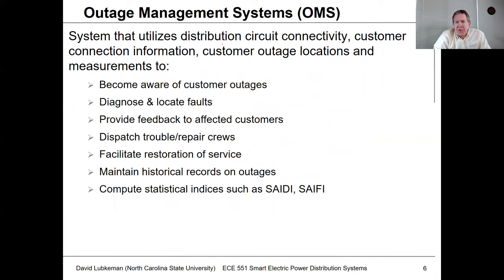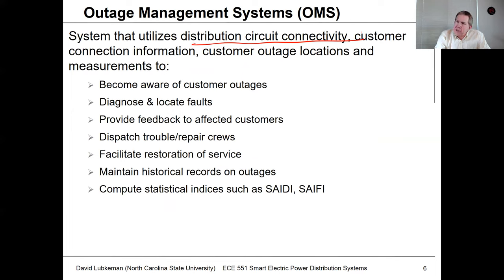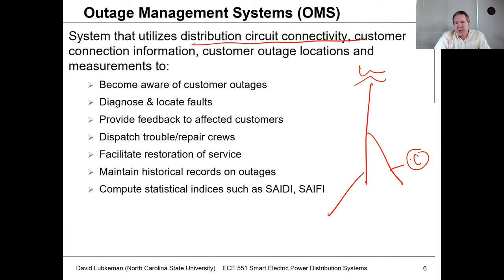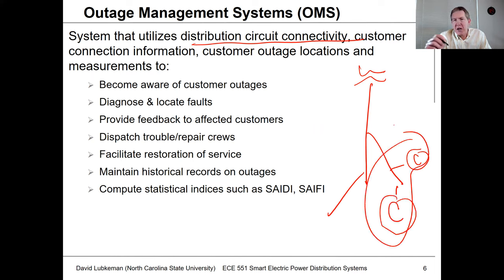The outage management system focuses on how you actually restore customers that are out of service due to something like a fault. The type of information needed includes distribution circuit connectivity — essentially the same information that goes into a power flow. You need to know how a customer interconnects all the way to the substation, what's between the substation and that individual customer, what phase they're connected to, and the common upstream customers to help find the nearest upstream protection device.